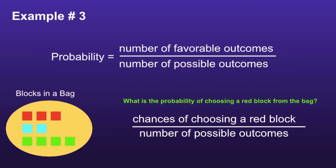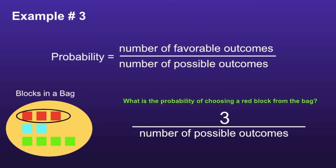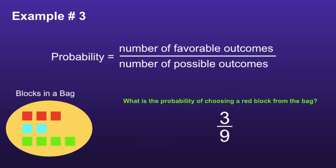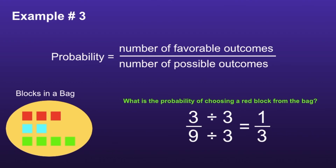Example number 3: What is the probability of choosing a red block from the bag? You can see in the bottom left of the screen, we have a certain number of blocks in a bag, and we want to determine the probability of choosing a red block. In the numerator is the chances of choosing a red block — looking in that bag, I can see that there are three red blocks, so our numerator will be 3. The denominator is the number of possible outcomes — all together in the bag, there are 9 blocks, so our denominator will be 9. We can simplify this fraction by dividing both 3 and 9 by 3. 3 divided by 3 is 1, and 9 divided by 3 is 3. So the probability of choosing a red block from the bag is 1 third.